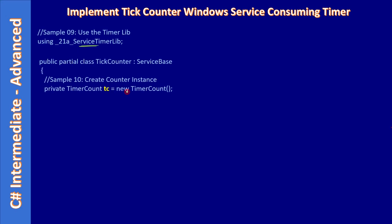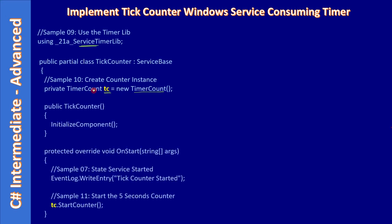If you see TimerCount, we are creating the instance of our class TimerCount — we changed this component name also in the demo. Next, if you see we already have OnStart. We are already making this event logger entry here. We are simply calling the method StartCounter from our timer component because it's available through the class library.